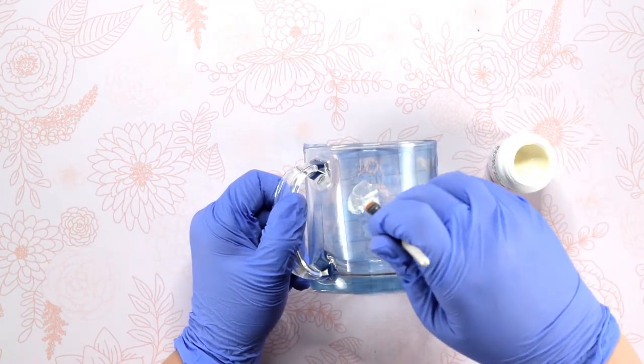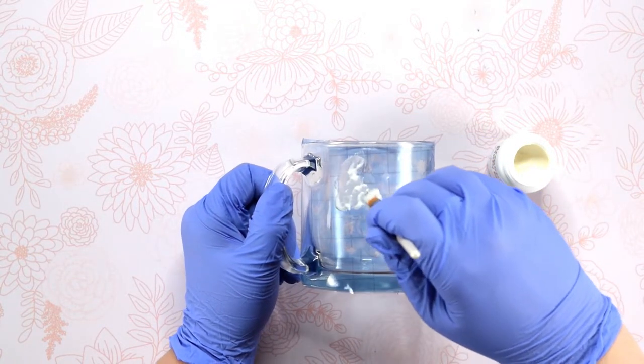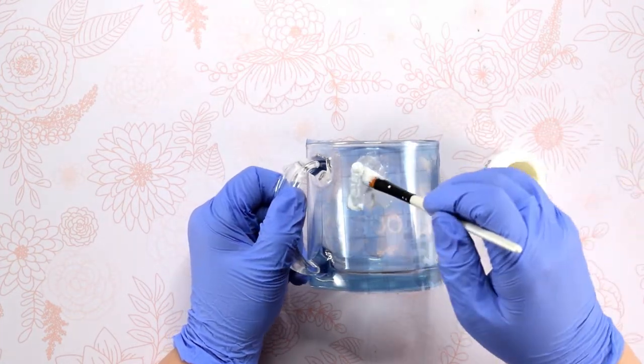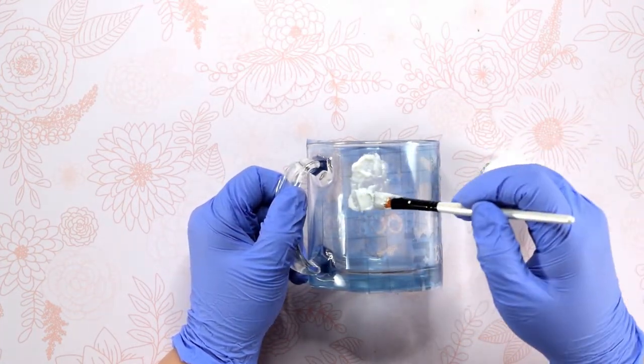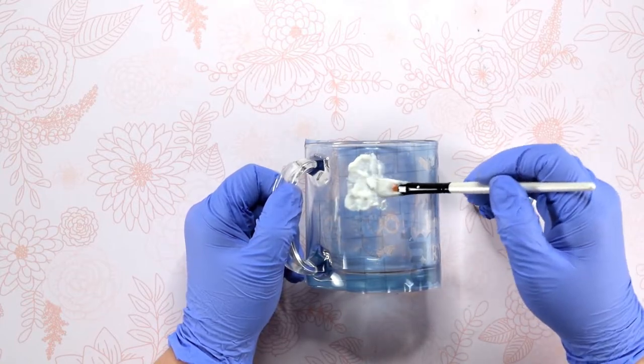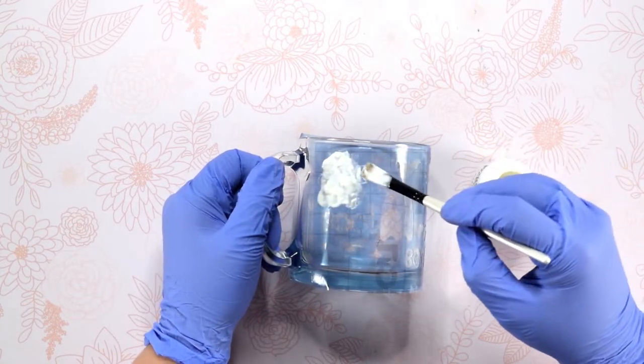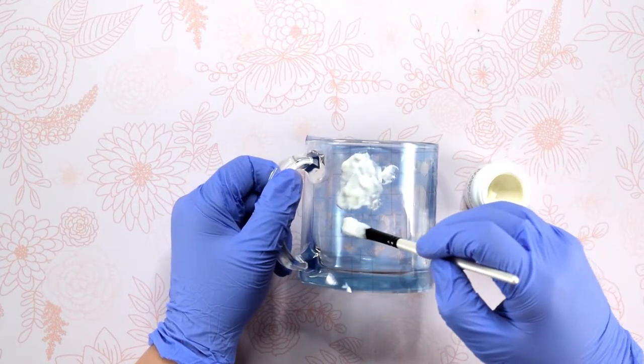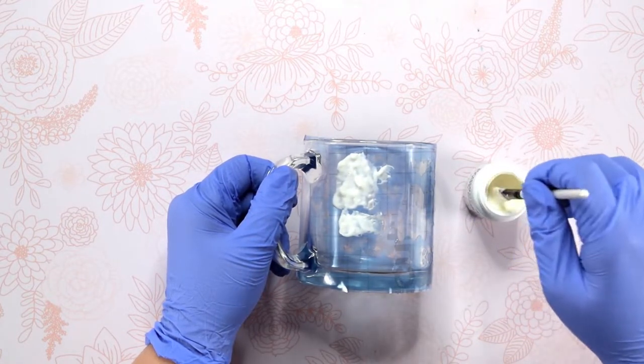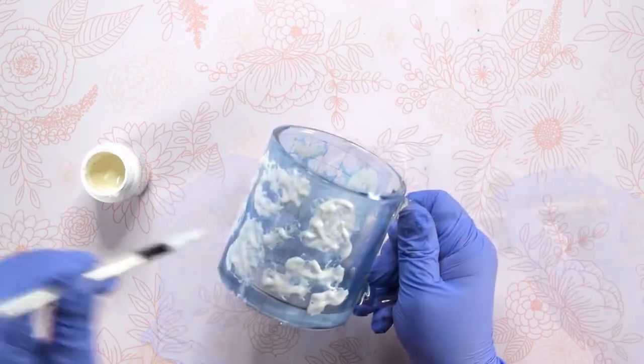When you're applying the etching cream, you want to make sure to kind of glob it on instead of painting it on. Don't worry about all of the excess cream that you're using. We will scrape it off later and put it back in the bottle. Once you have the etching cream applied everywhere, you will need to leave it sitting for 15 minutes.